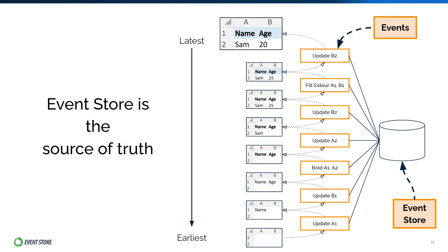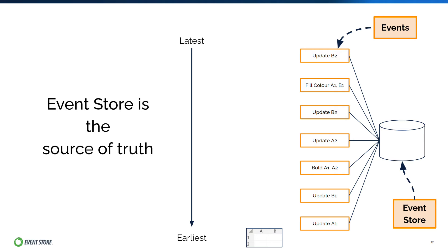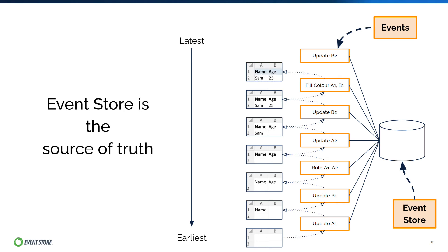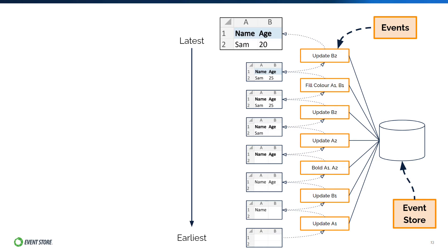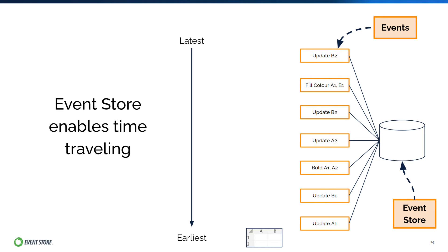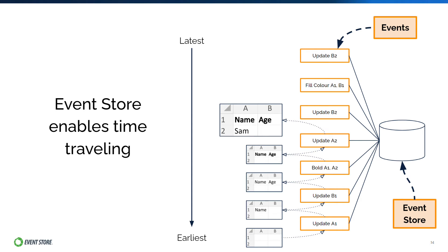Thus, even if the file for the current state is accidentally deleted, it can be reconstructed by replaying all the events from the beginning, one by one, to the end. Event sourcing also enables time traveling in our application to past dates by replaying events from the beginning to any unique point in time. This ability to view data and its context at any point in time amplifies your business insights.